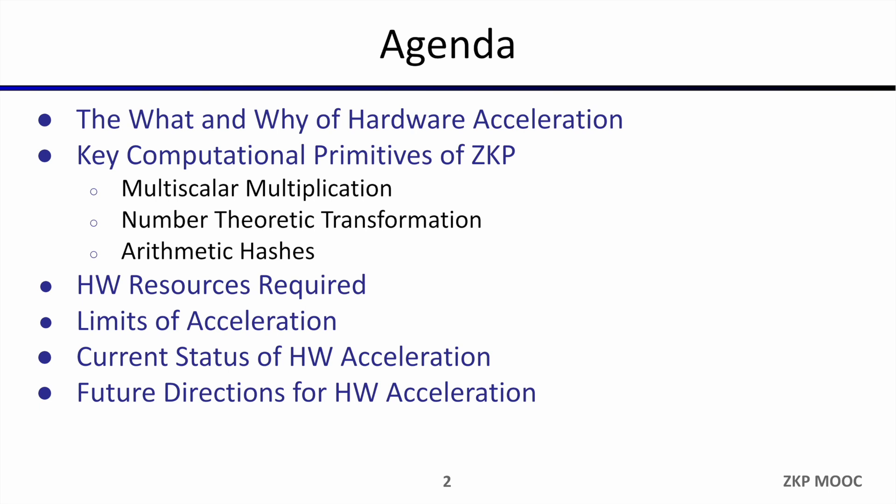We'll begin today's lecture by discussing what hardware acceleration is and why it is important for zero knowledge proof generation. After this we'll move on to discuss some of the computationally expensive operations involved in proof generation — operations such as multiscalar multiplication, number theoretic transformation, and arithmetic hashing.